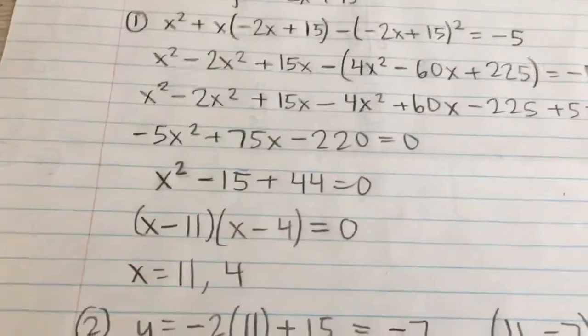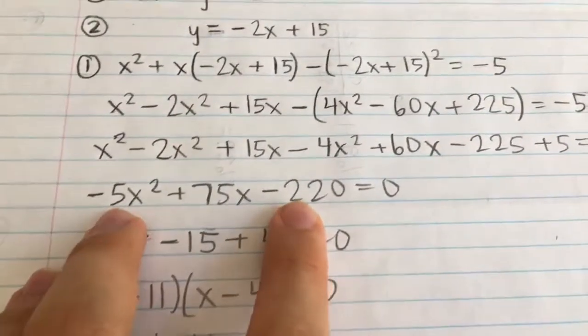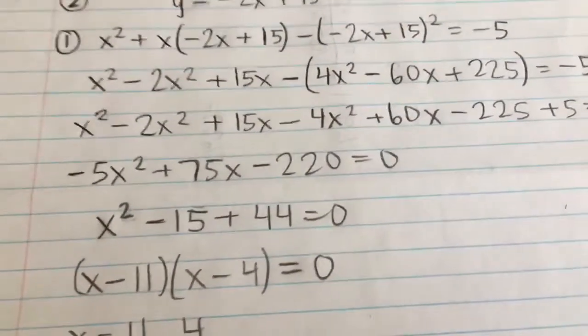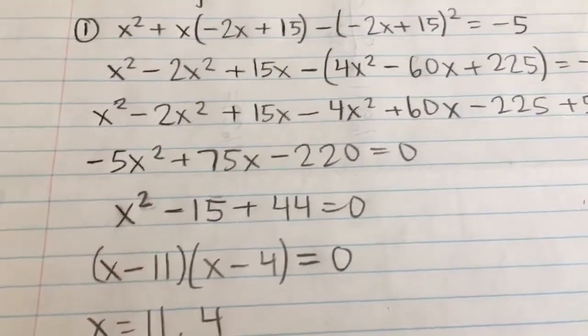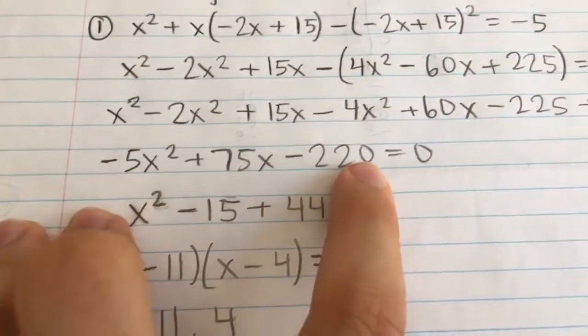Now I saw that each of these has a common factor of 5, and I also saw that I have a negative, so I typically like to have a positive leading coefficient. It's just easier to solve and factor.